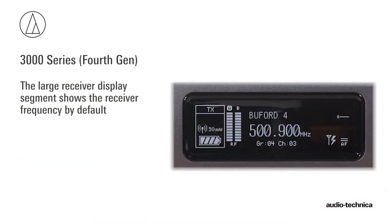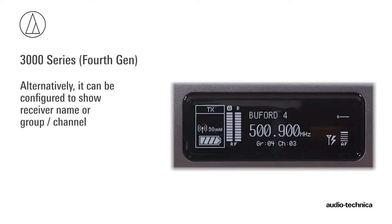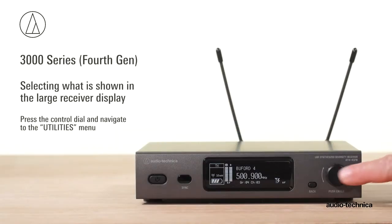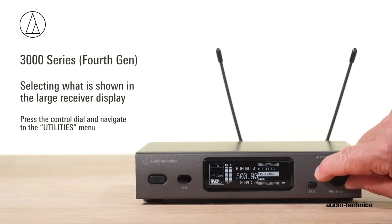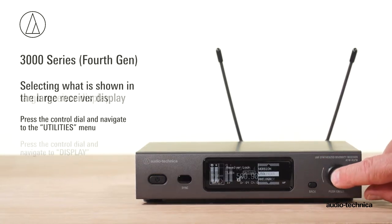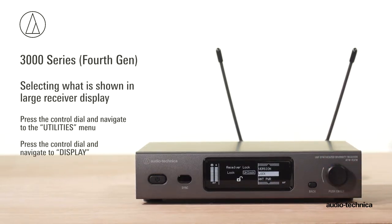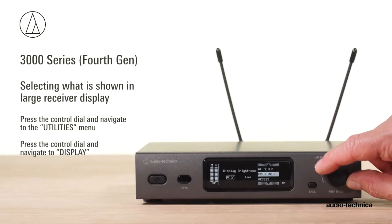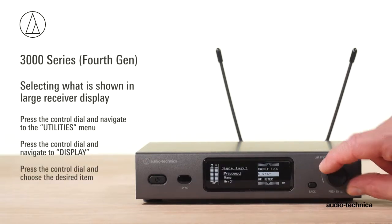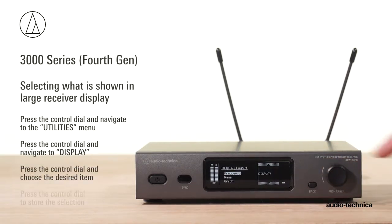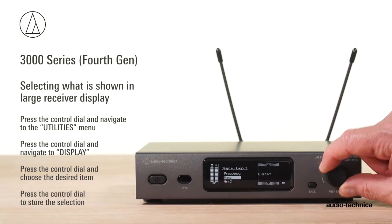The large segment on the receiver display shows frequency as a default. Alternatively, it can show receiver name or group and channel. To change the display, press and rotate the control dial and navigate to the Utilities menu. Press and rotate the control dial and navigate to Display. Press the control dial and choose the desired item, then press the control dial to store the selection.